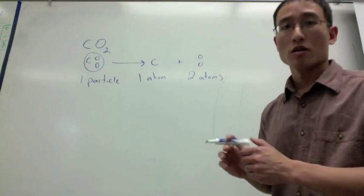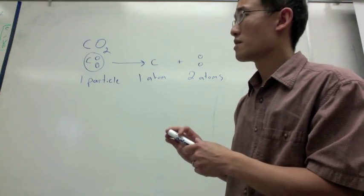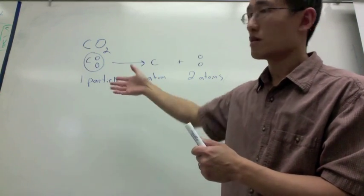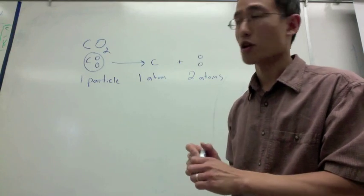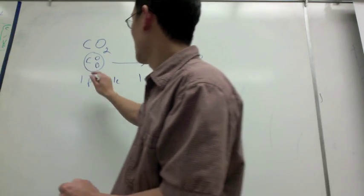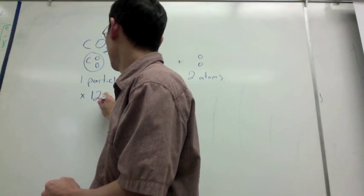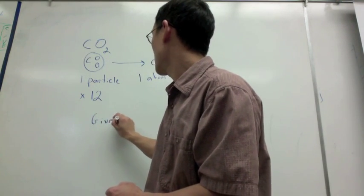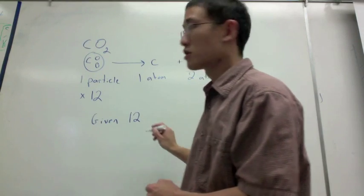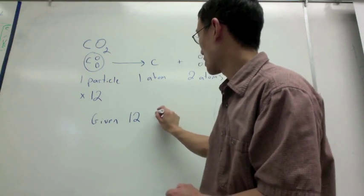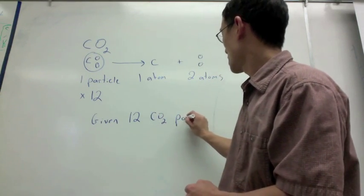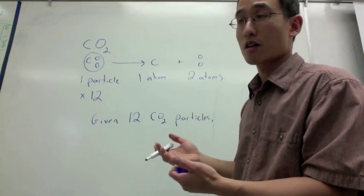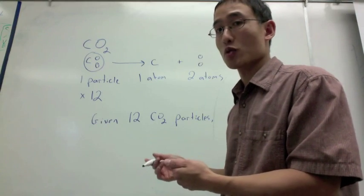Now, let's say I have a dozen carbon dioxide particles. So given 12 CO2 particles, how many oxygen atoms will I get from that?